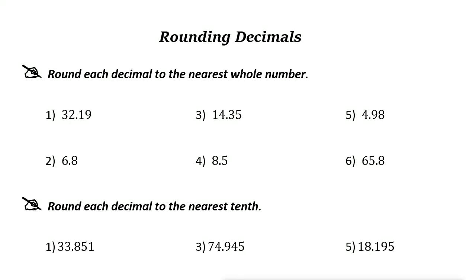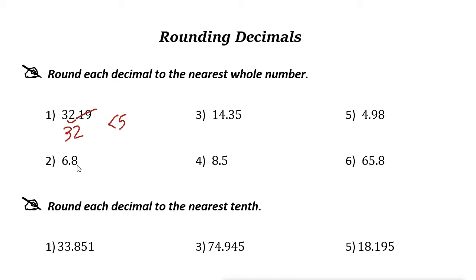Rounding decimals: to round a decimal to a certain place value, first we need to find that place value. Here we want to round each decimal to the nearest whole number. The whole number place — the ones digit — is 2. Take a look at the digit on the right side: it is 1. If the digit is less than 5, just ignore the digits to the right. So the answer here is 32.